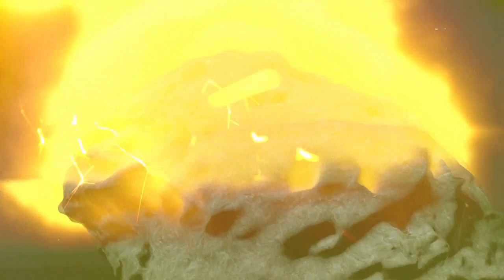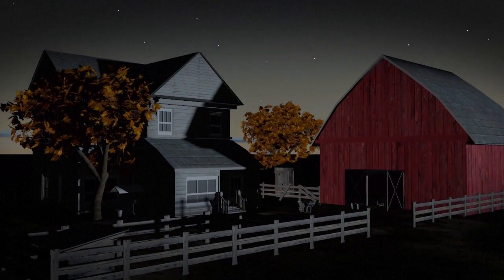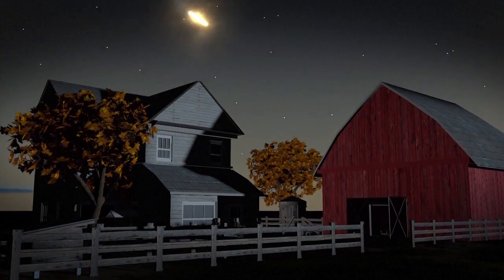When a meteorite enters the atmosphere at a very high speed, 20 kilometers a second, it ignites, leaving a luminous trail across the sky.